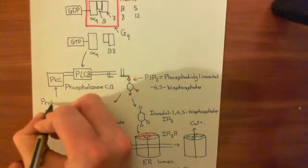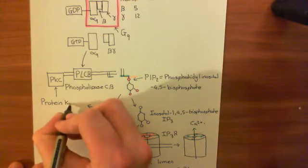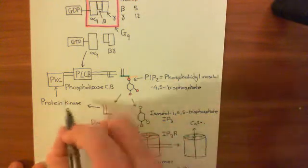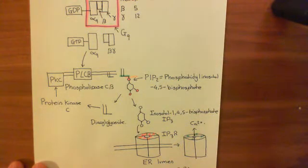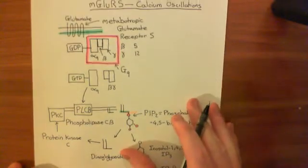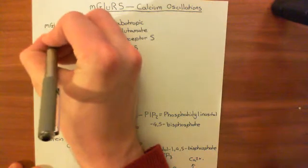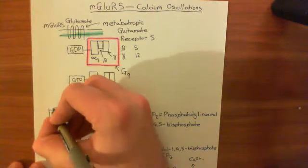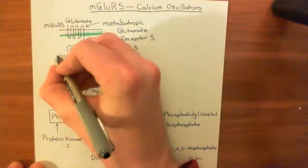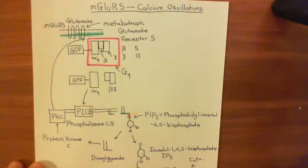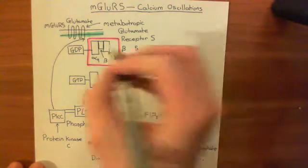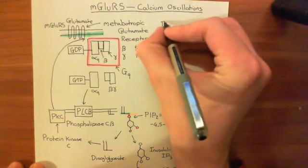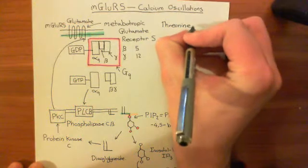Protein kinase C is activated by diacylglycerol. And what is protein kinase C going to do? It's going to lead to a negative feedback loop on the mGluR5 receptor. Protein kinase C is a serine-threonine kinase, and what it's going to do is phosphorylate a threonine residue on mGluR5 — specifically a threonine at position 840.